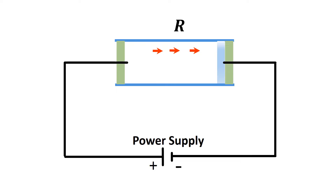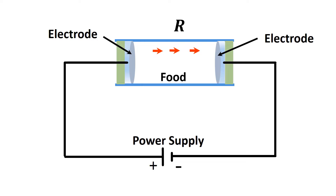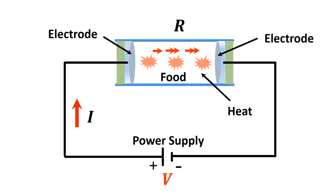Ohmic heating is a process where alternating electric current is passed through a food material and heat is internally generated within the material due to its resistance to the applied electric current. Food is placed in a cylindrical tube with two electrodes at each end, and we complete the electric circuit with a power supply connected to the electrodes. We then apply a voltage, causing flow of current through the food, generating heat uniformly within the food matrix.